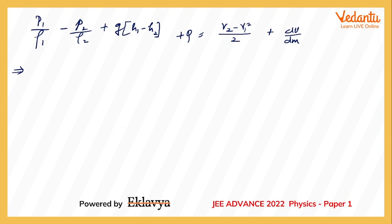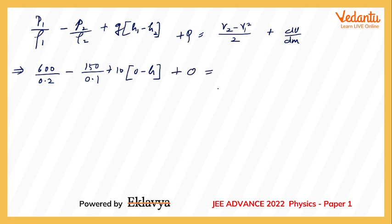Now substituting values: p1 = 600, ρ1 = 0.2; p2 = 150, ρ2 = 0.1; g = 10; h1 = 0, h2 = h; heat supplied q = 0 (adiabatic process); v2 = 20 m/s, v1 = 40 m/s. We still need to calculate du/dm, the increase in internal energy per unit mass.